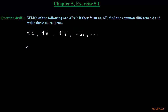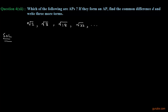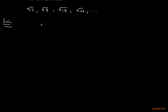Let us solve the next part of question 4 of exercise 5.1 of chapter 5. We have to check whether this sequence of numbers is an AP or not. If it is an AP, we have to find the common difference D and write three more terms.